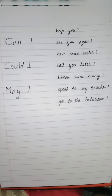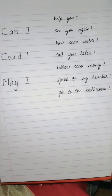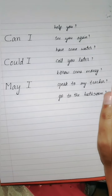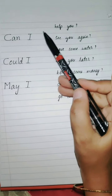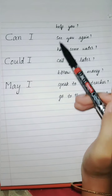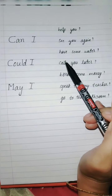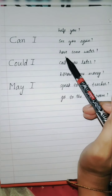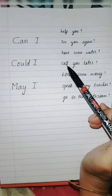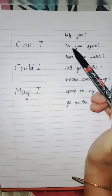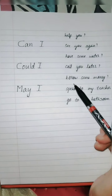So when you want to take permission from someone, use these forms. And remember: after 'can I,' 'could I,' and 'may I,' there is always a verb — help, see, have, call, borrow, speak, go — all of these are verbs.